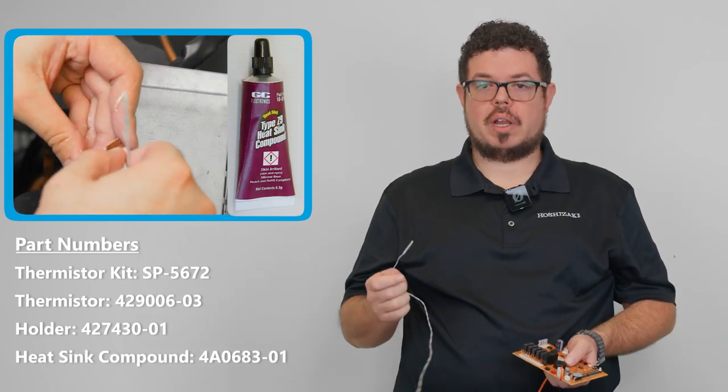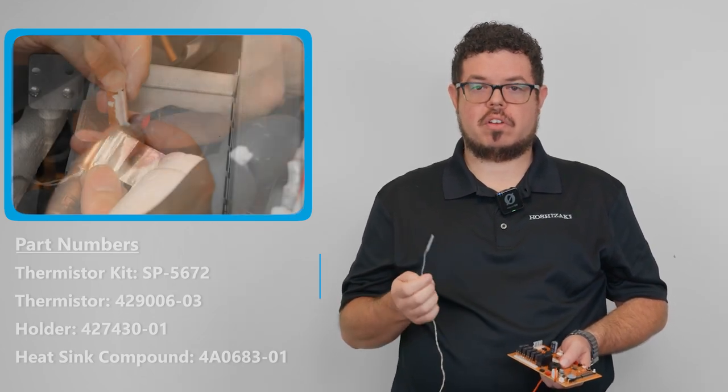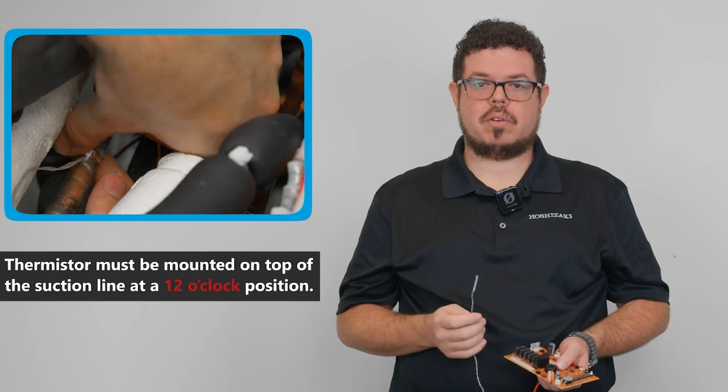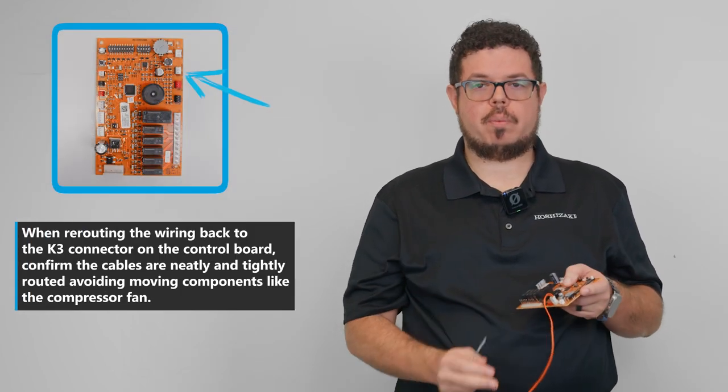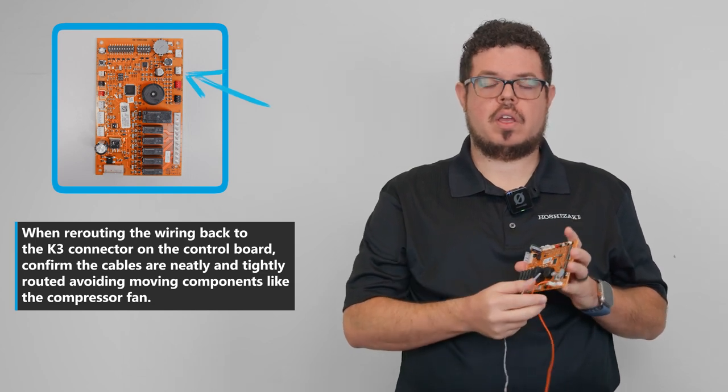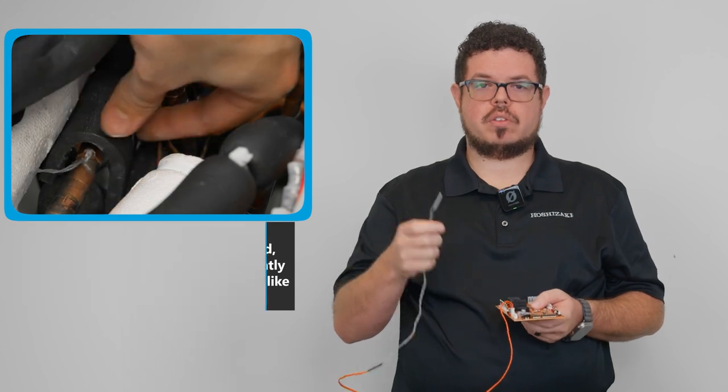Next, we want to apply the heat sink compound to the copper tube. Insert the thermistor and secure the assembly with the tape included. We want to carefully reroute the thermistor wiring back to the K3 terminal on the control board, and then also re-insulate the area around the thermistor on the suction line.